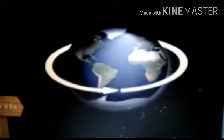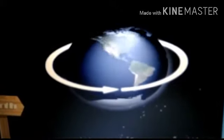Look at this picture of the earth. The earth is moving around itself. This movement is known as the rotation of the earth. The earth also moves around the sun. This movement is known as the revolution of the earth.